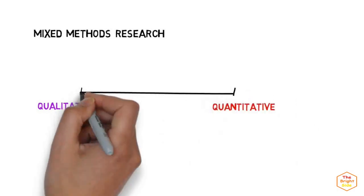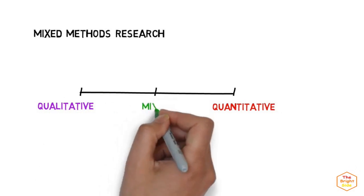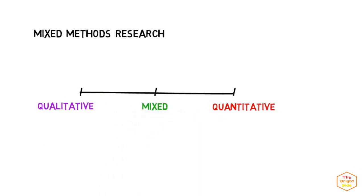Mixed methods research involves combining quantitative and qualitative research. It takes a more pragmatic approach whereby the type of research used should be based on what will best help you answer your research question. The research required will generally fit somewhere on this continuum.